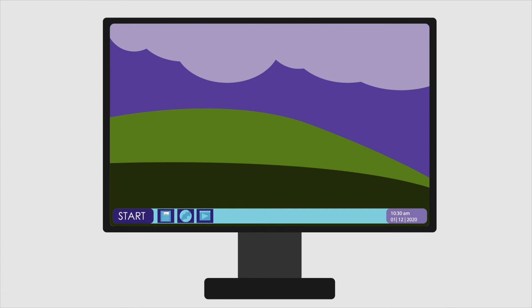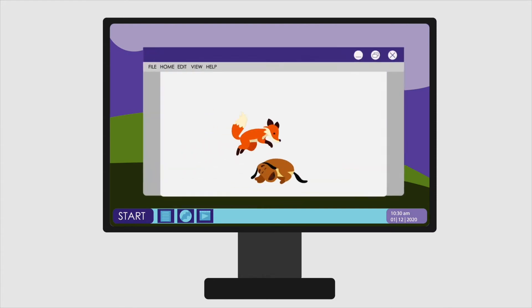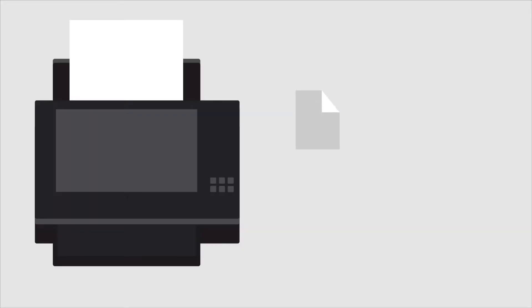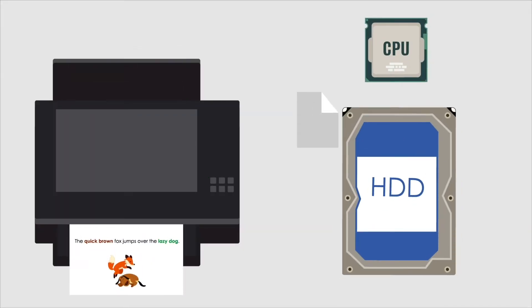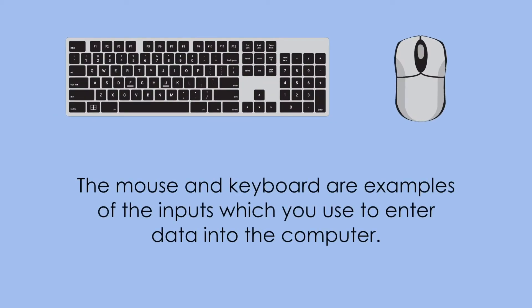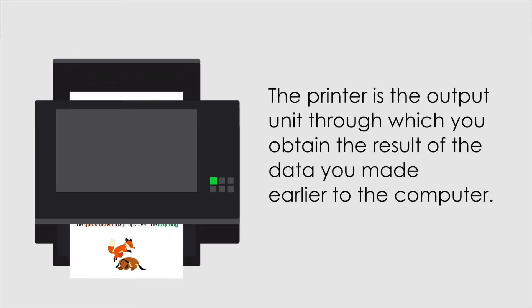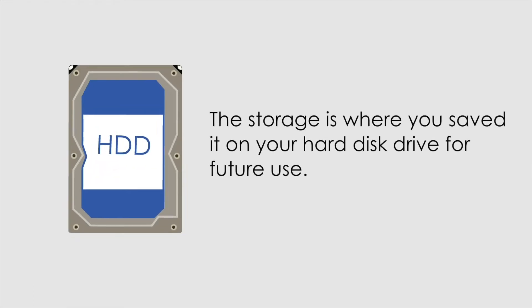Let us put these operations into a practical form. For example, if you want to write an essay on a computer, you first click on the Microsoft Word program using the mouse and type your essay using a keyboard. Then while typing, you can modify the font style and size, change the color, add pictures, and much more. When finished, you print it using a printer and save it on your hard disk drive for future use. The mouse and keyboard are the inputs, the CPU is the processing unit that applies changes to the document, the printer is the output unit, and the hard disk drive is the storage.